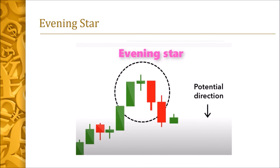Then there is the evening star, which looks similar to the morning star pattern but in the opposite direction. It signifies selling pressure or injection of funds by market makers to the downside of the market. It involves a series of green candles, then a candlestick with a small body in between, followed by red candlesticks. This signifies that market makers have induced funds increasing the supply of the currency pair.